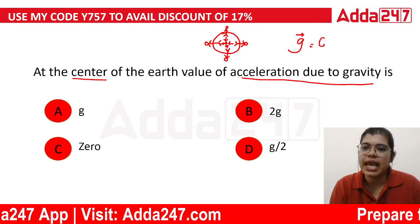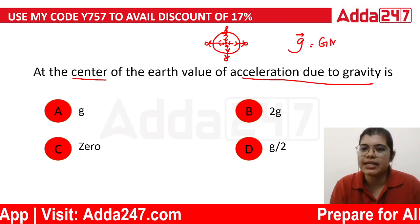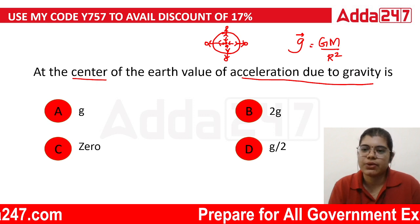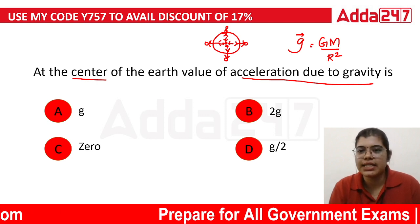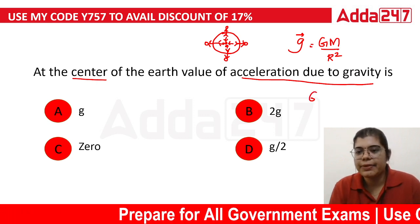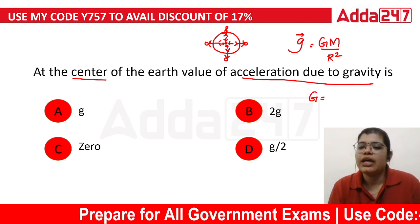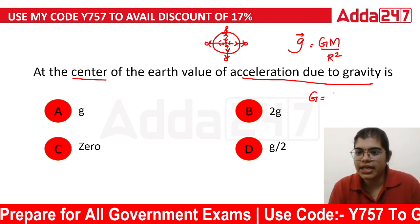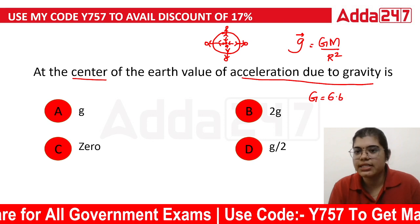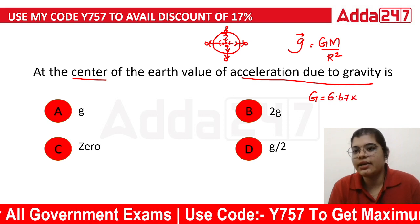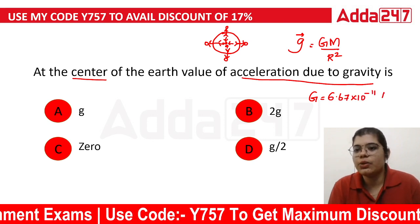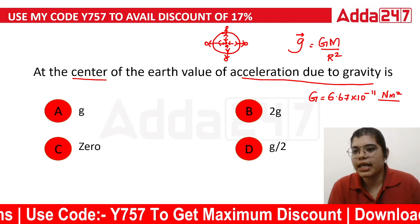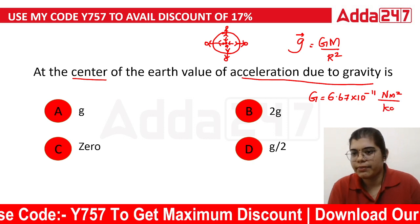The formula for acceleration due to gravity is g = GM/r². G is the universal gravitational constant, which is 6.67 × 10⁻¹¹ Newton meter square per kilogram square.